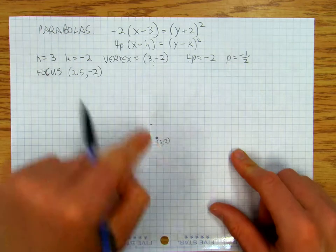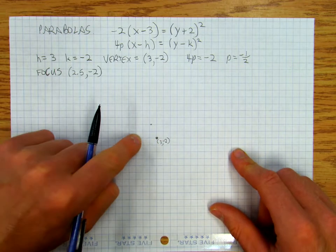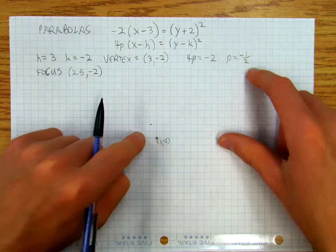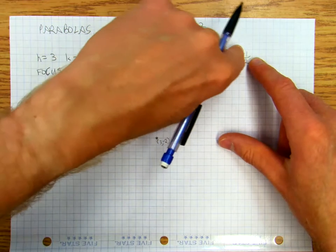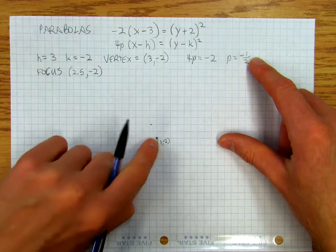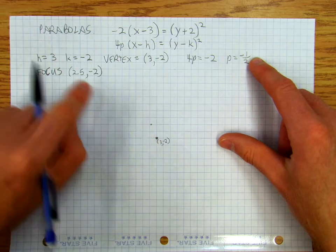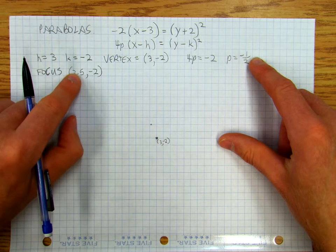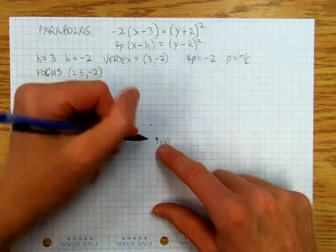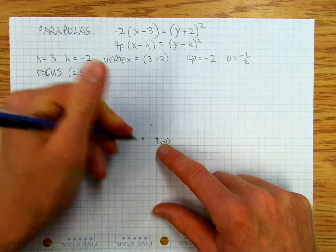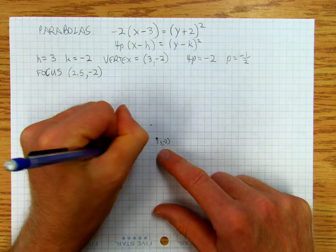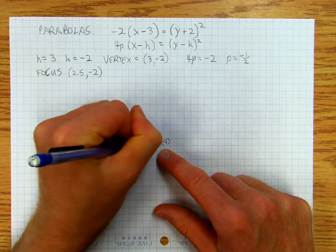So I'm going to go to the left, so 1 half in the negative direction. 3 minus 1 half is 2.5. So I'm going to say that that's my focus right there, 2.5, negative 2.